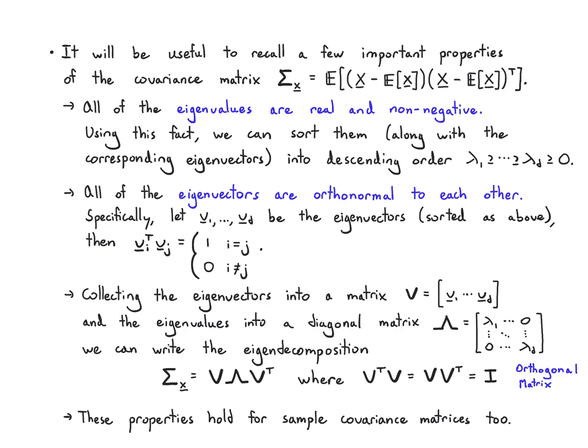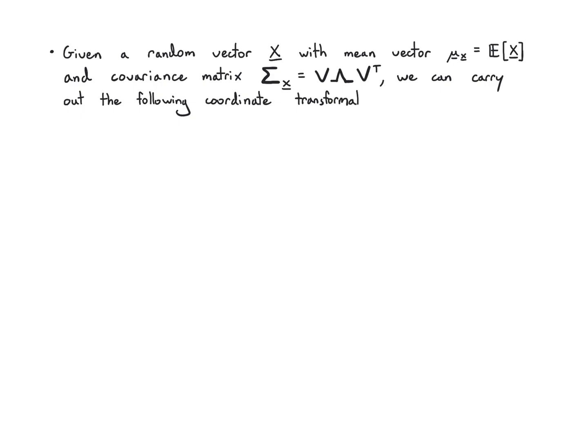Given a random vector x with mean vector μₓ = E[x] and covariance matrix Σₓ = VΛVᵀ, we can carry out the following coordinate transformation, and this is basically PCA. What we're going to do is first center the distribution at the origin by subtracting the mean.